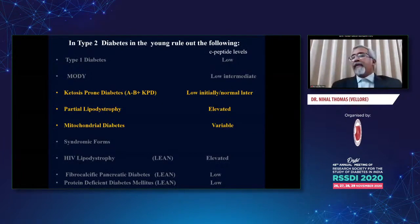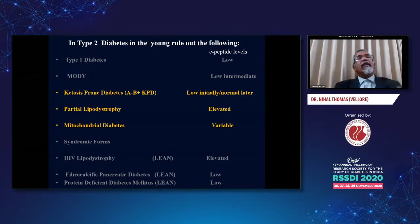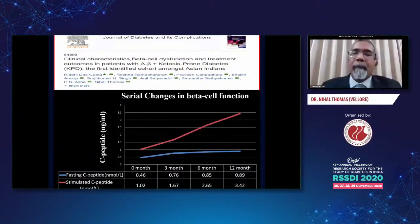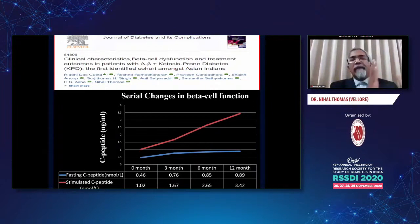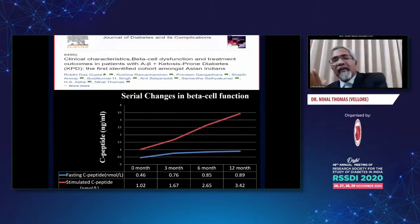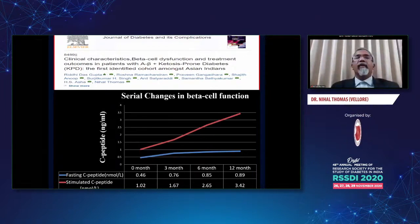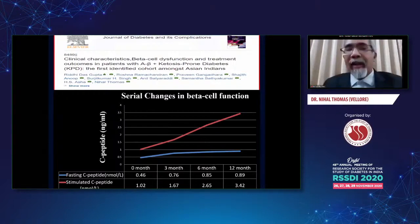Ketosis-prone diabetes: in the typical Western population later onset is around 35, but the Indian population can start between the ages of 25 to 35 with an earlier onset. This was our first documented progressive series of follow-up at one year from initial onset, comparing controls of classical GAD antibody-positive type 1 diabetes versus those who were GAD antibody-negative, and we found that the C-peptide levels recovered in a period of one year's time. So this is an important differential as well.